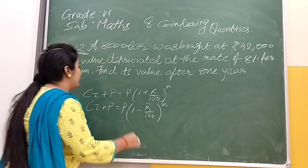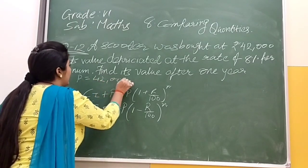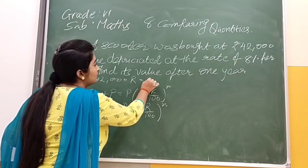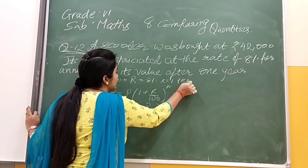Now let us see. We have P given, that is 42,000. R is given, that is 8%, and n is for 1 year.